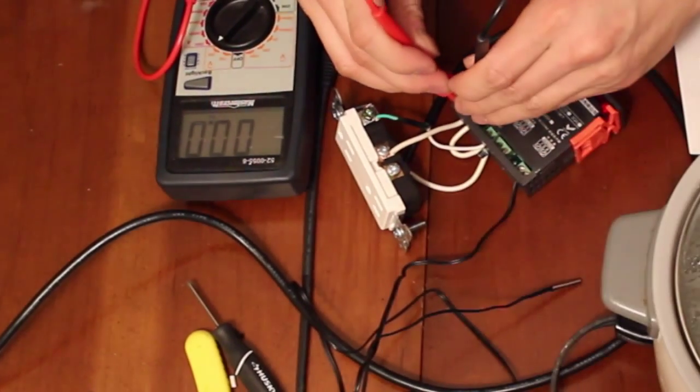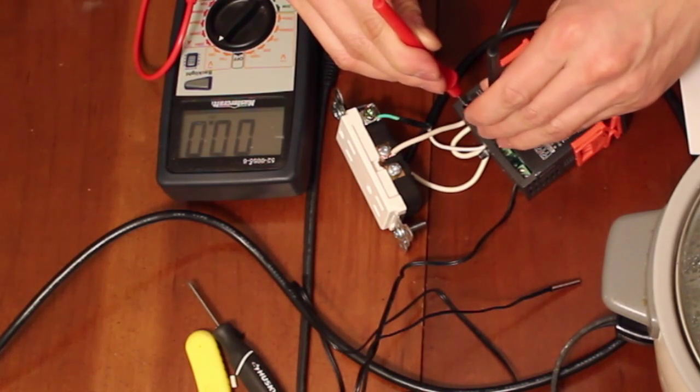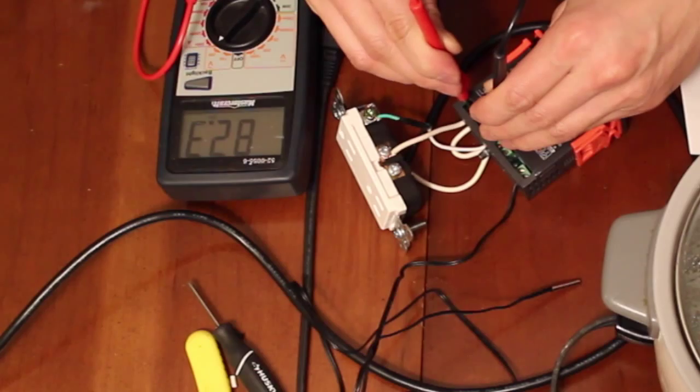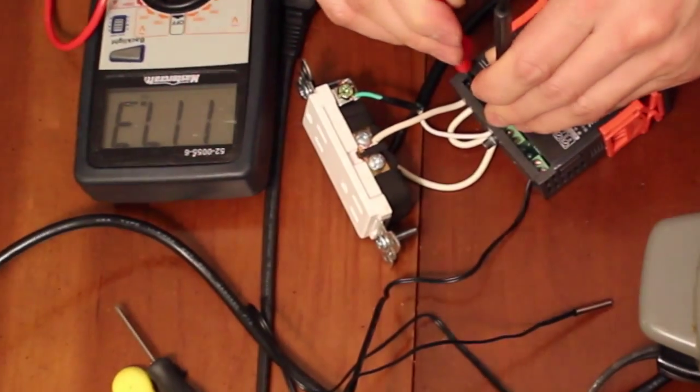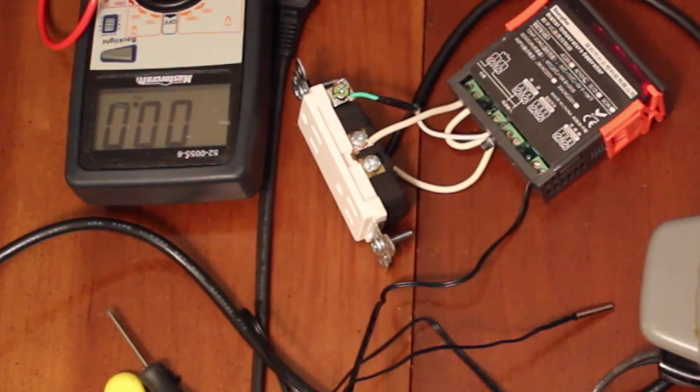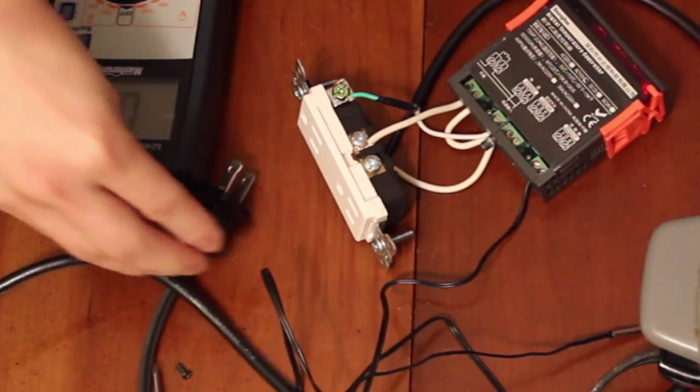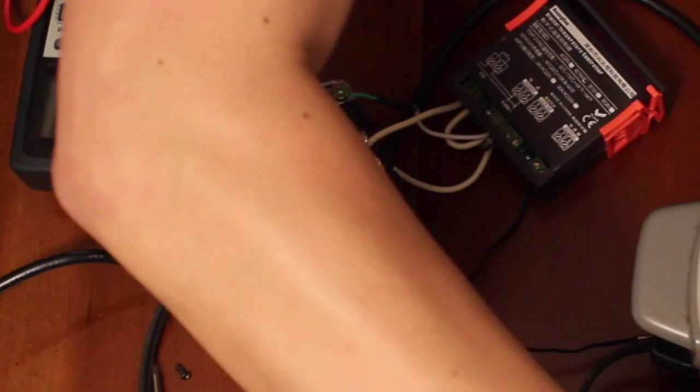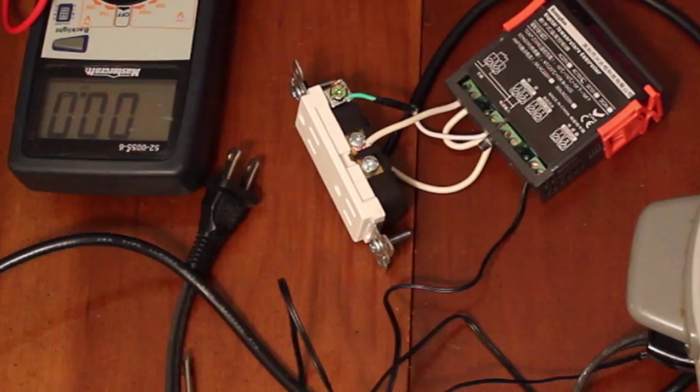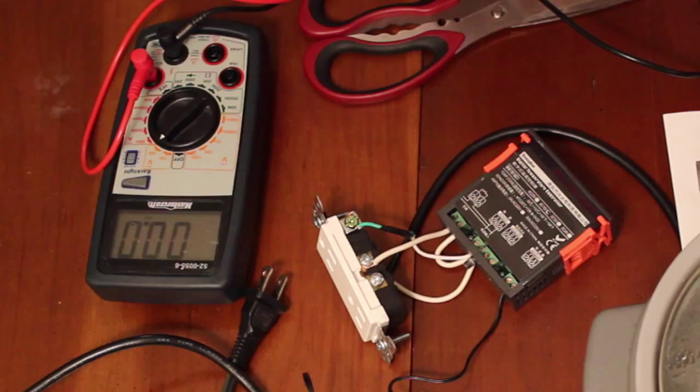This means that the voltage here should be zero because it's a switch, and the voltage between here and here will be 120 because we are powering. So right now if I plug my rice cooker inside, we should see that it turns on. But before I do that, I'm going to turn off the power and I'm going to make it a little safer.